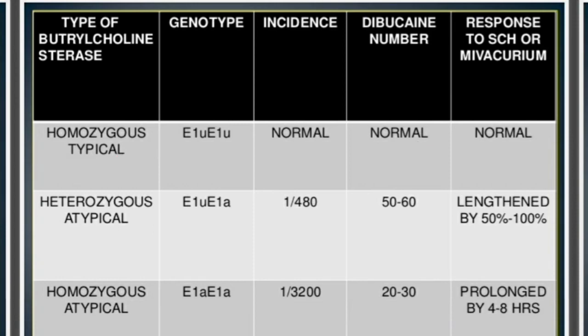However, if the Dibucaine number is 40 to 60%, then we can say that the person has an atypical heterozygote, meaning there is a mutation in the plasma pseudocholinesterase gene.